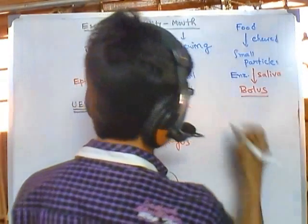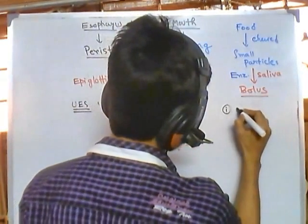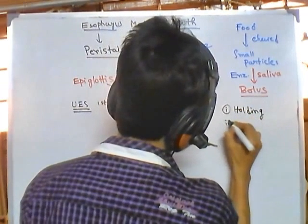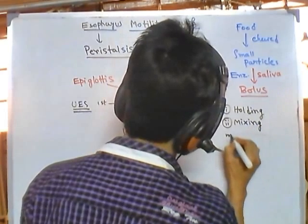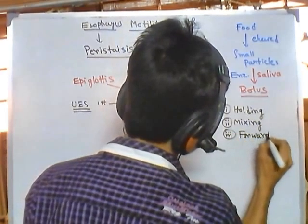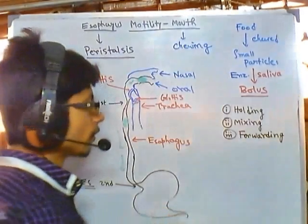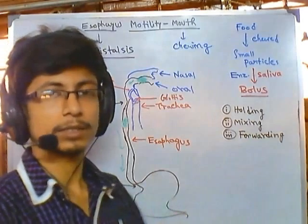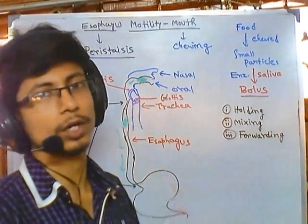In the stomach we have three functions: holding the food, mixing the food, and forwarding the food. For holding the food, the structure of the stomach is very well designed because it is a large sack-like structure, so it can hold food for a longer period of time.